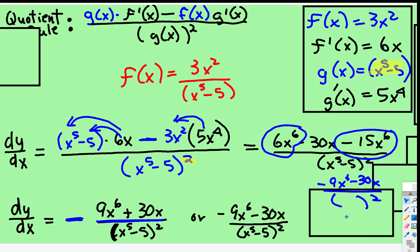Or you can leave it like this. Negative 9x to the sixth subtract 30x all over the denominator squared. All right, that's it for this one.